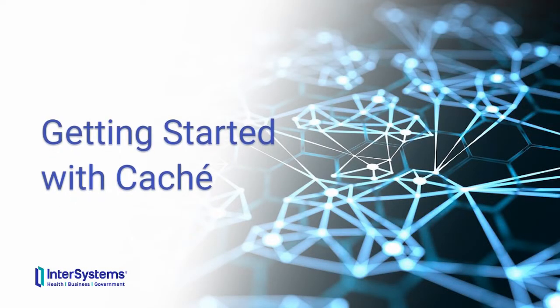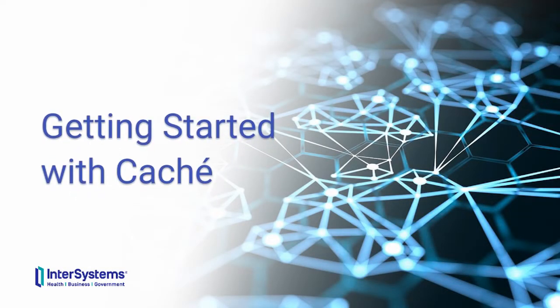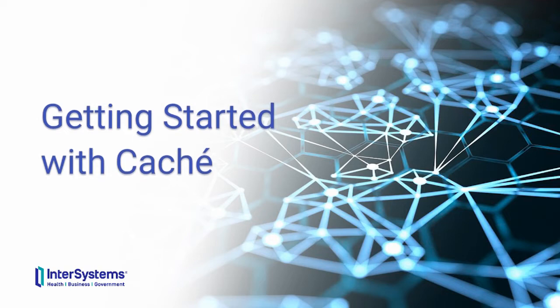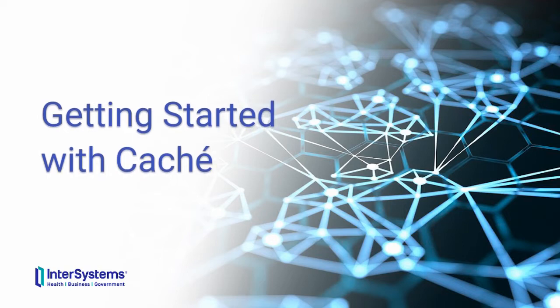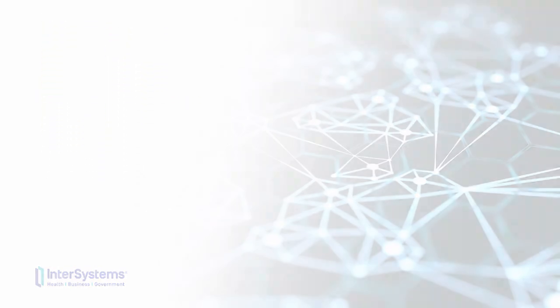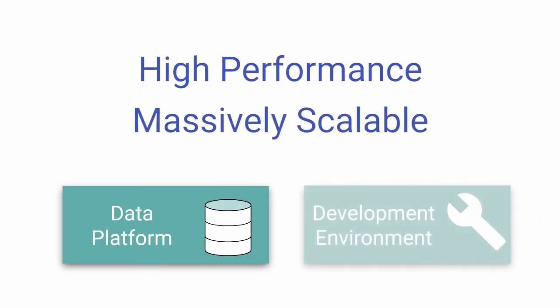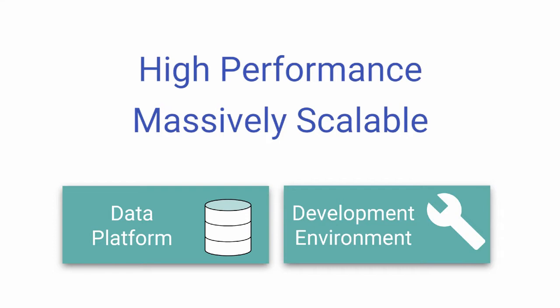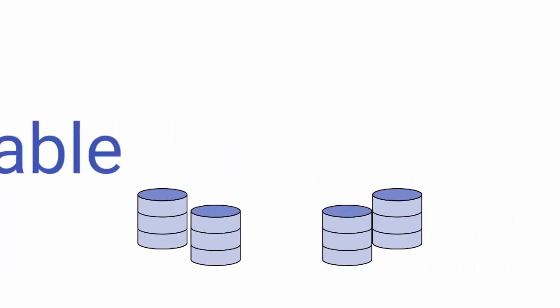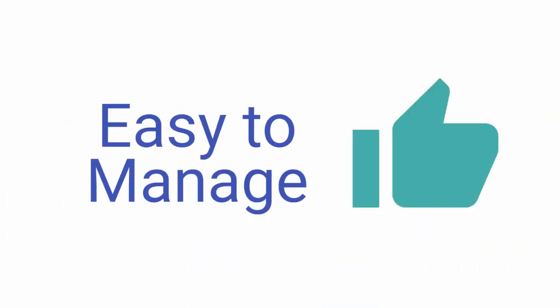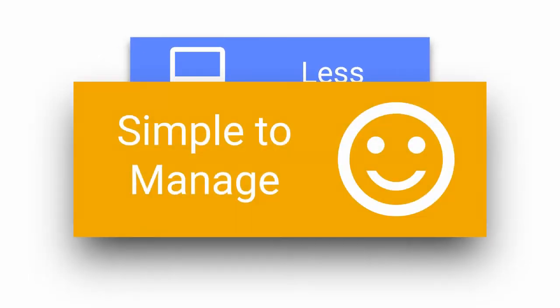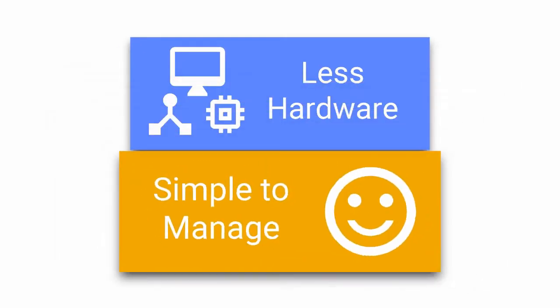Welcome to Getting Started with Cache. This video introduces you to Cache and many of its characteristics. Cache is a high-performance and massively scalable data platform and development environment for creating applications. It is fast, scalable, and easy to manage. It performs and scales better with lower hardware requirements and is simpler to configure and manage.